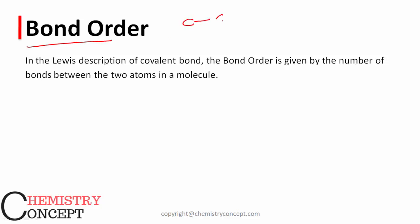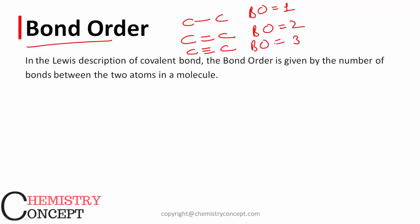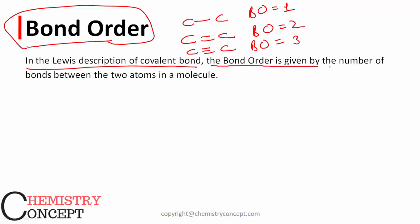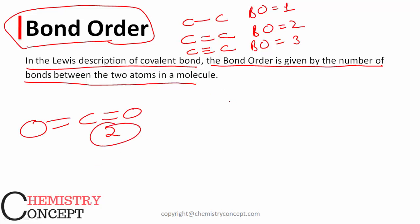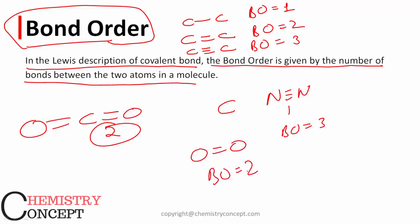Bond order is a technical term for a simple concept: if it is a single bond, bond order is one; if it is a double bond, bond order is two; if it is a triple bond, bond order is three. Bond order greater than three does not exist. It is only for covalent bonds — whatever is the number of bonds present between two covalently bonded atoms is called bond order. For example, in carbon dioxide the bond order is two, in nitrogen N₂ with a triple bond the bond order is three, and in oxygen O₂ the bond order is two.